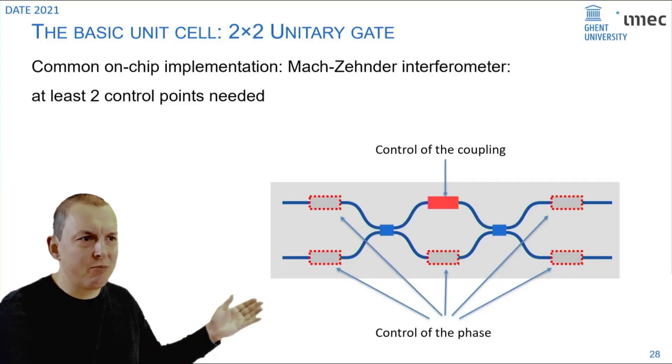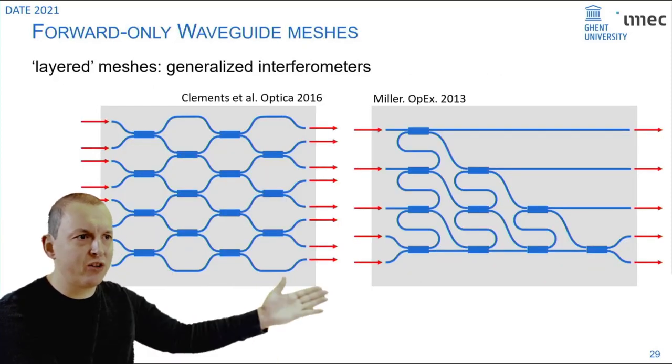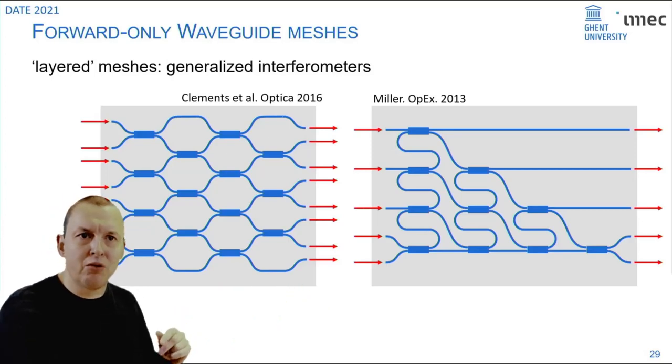You can organize these gates in many different ways. You can organize them in a rectangular way or a triangular way and they both give you an arbitrary linear combination between your inputs and your outputs.